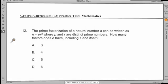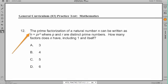Let's start by reading the problem. Number 12. The prime factorization of a natural number n can be written as n equals p r squared, where p and r are distinct prime numbers. How many factors does n have, including one in itself? Then it gives us its answer choices: 3, 4, 5, and 6.